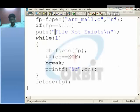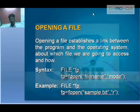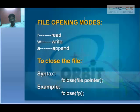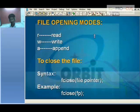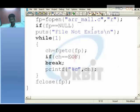The next thing is file opening modes. R stands for reading, W stands for writing to the file, and A for append. To close the file, say fclose along with the file pointer. As you can see, it is in reading mode, and I am closing that particular file by passing fp as its argument.